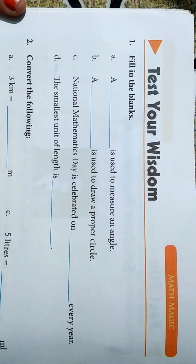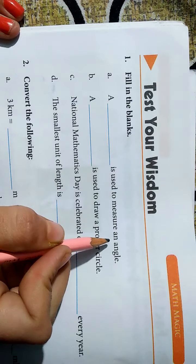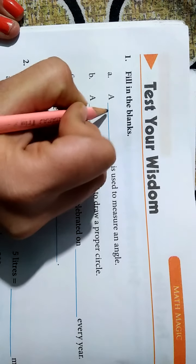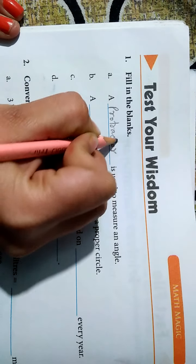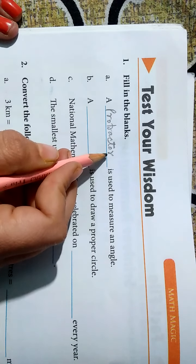So we have first question fill in the blanks. A dash is used to measure an angle. Angle ko measure karne ke liye hum kya use karte hain? Protractor. P-R-O-T-R-A-C-T-O-R. Protractor. Clear?